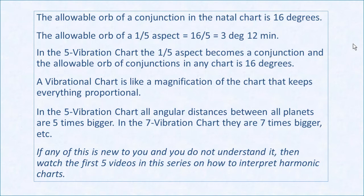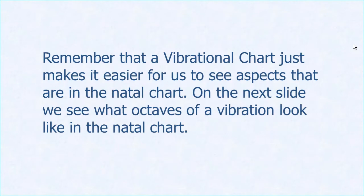The orb of conjunctions in any vibrational chart is 16 degrees. If you're familiar with this, it should make sense; if it's new, go through it more slowly with the other videos. A vibrational chart is like a magnification of the chart — it keeps everything proportional. So in a five vibration chart, everything is multiplied by five; in a seven vibration chart, all angular distances are multiplied by seven, and so on.